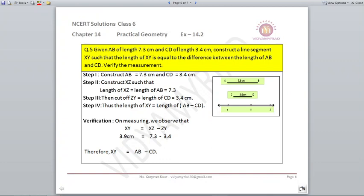So length of XY is equal to the difference of the length of AB minus CD. So what do we observe and how do we verify? Your XY is equal to total XZ, that is 7.3, minus ZY, that is 3.4. So your XY comes out to be 3.9. Now what is XZ? We know it is AB. And what is ZY? We know it is CD. So we can say that XY is equal to AB minus CD.